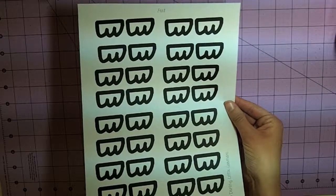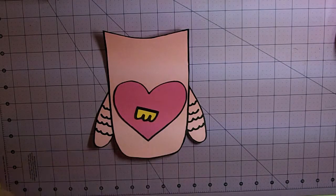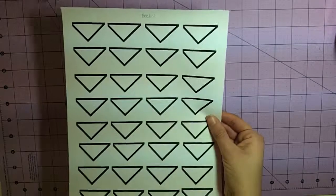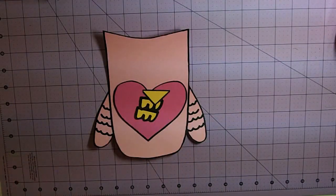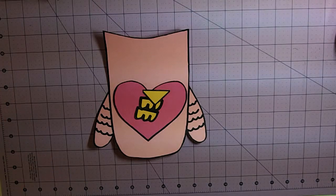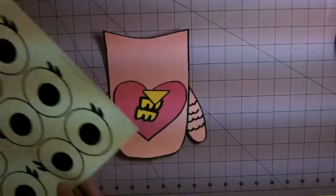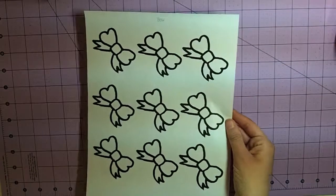You're going to cut out two feet, one beak, and there's two different eyes. You're going to want the ones with the eyelashes, and one bow.